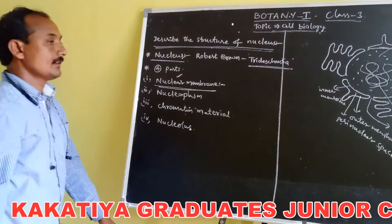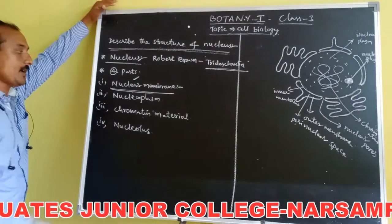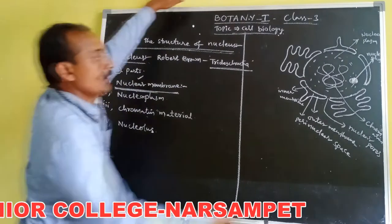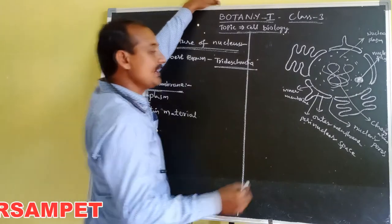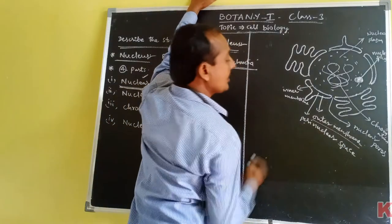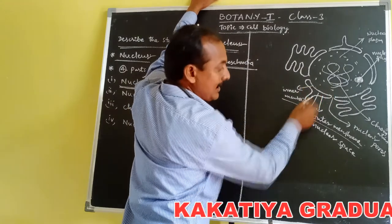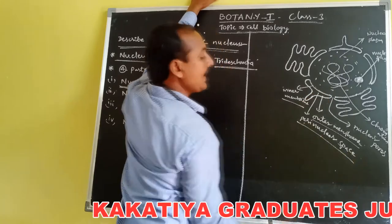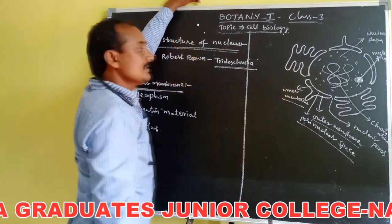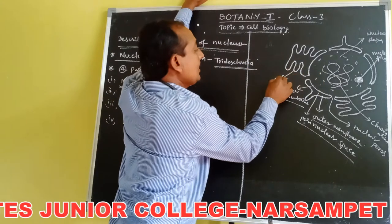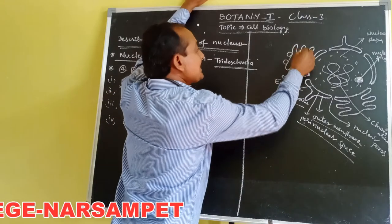Each nucleus consists of four parts. First one is nuclear membrane — the nucleus is surrounded by a membrane called the nuclear membrane. It is divided into two parts: outer membrane and inner membrane. The space between them is called the perinuclear space. The outer membrane is attached with the endoplasmic reticulum, and ribosomes are present on its surface.